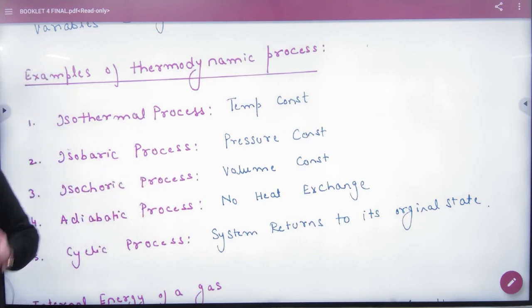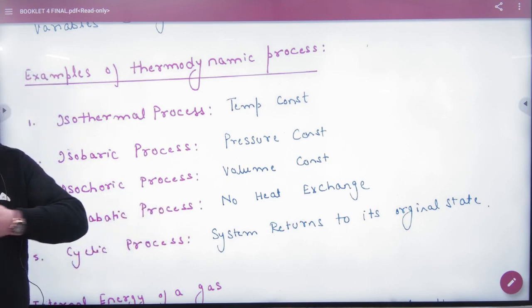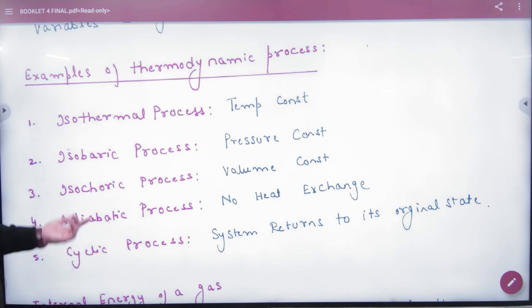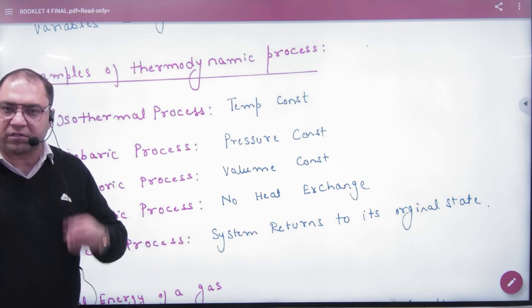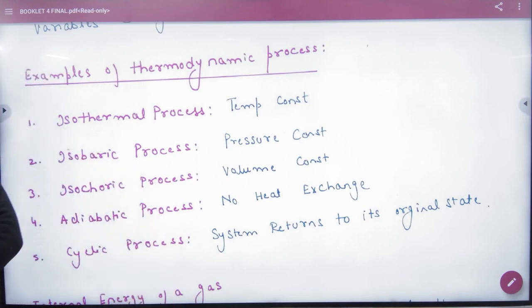Isochoric process is one in which volume remains constant. Next, adiabatic process, in which no heat exchange occurs. And next is cyclic process, in which the system returns to its original state after compression and expansion.